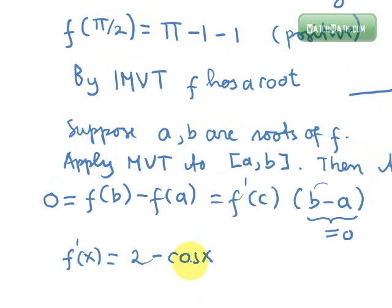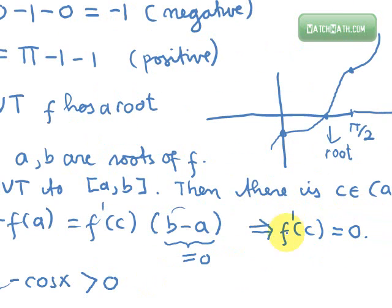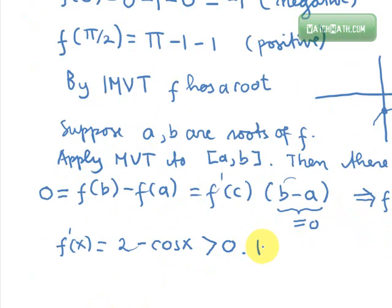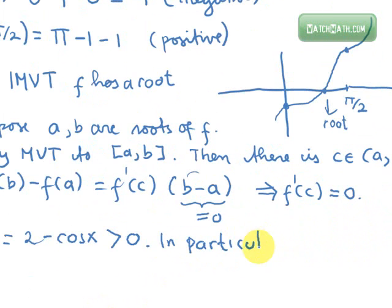And we know that cosine x, the value of cosine x is between negative 1 and 1. So 2 minus cosine x is always positive because the maximum value for cosine is 1. So it is not possible to have the derivative of f at c equal to 0. In particular, f prime of c is positive.